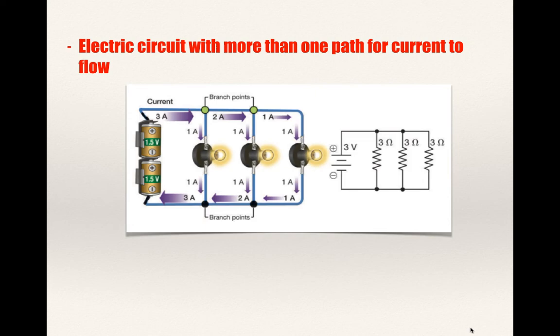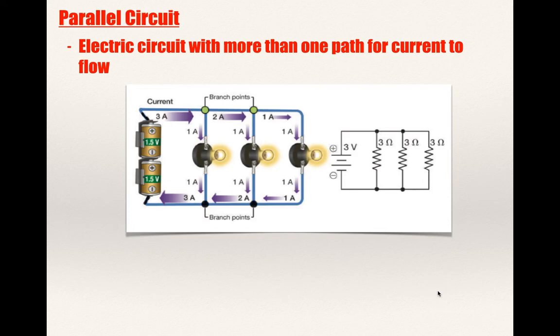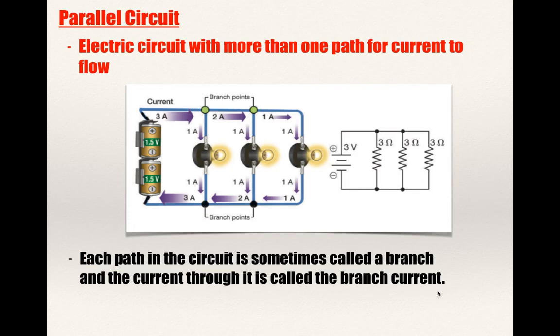You can see in the picture how the current can follow those purple arrows and have multiple paths as it flows around. Each of these paths is sometimes called a branch, and the current through it is called the branch current.